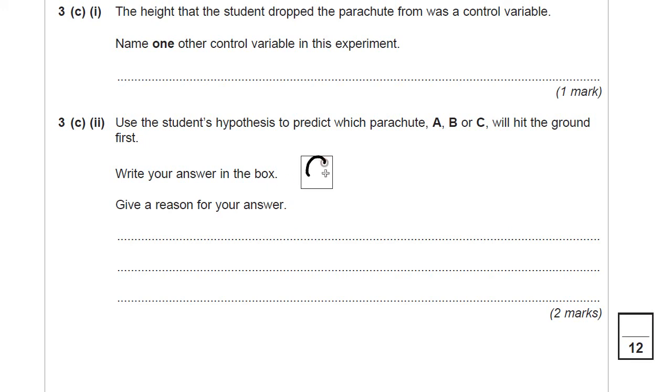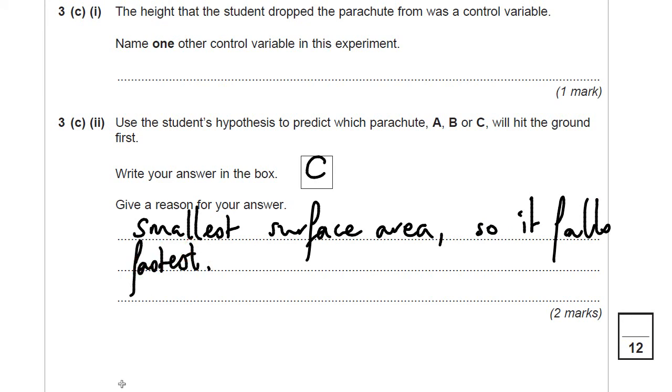That's right, it's going to be C. You need to give a reason to get any marks at all in this. Okay, you only get, if you write C and don't explain it, you don't get any marks. Give a reason for your answer. Well, it's got the smallest surface area, so it falls the fastest. Okay, you could say smaller surface area so it has the least drag so it falls faster. But that is your, importantly, that is your answer. Okay, thank you very much. If you're ready, we'll go straight on to the next question.